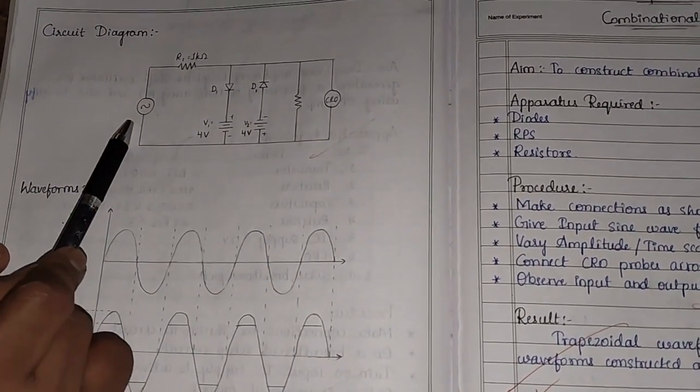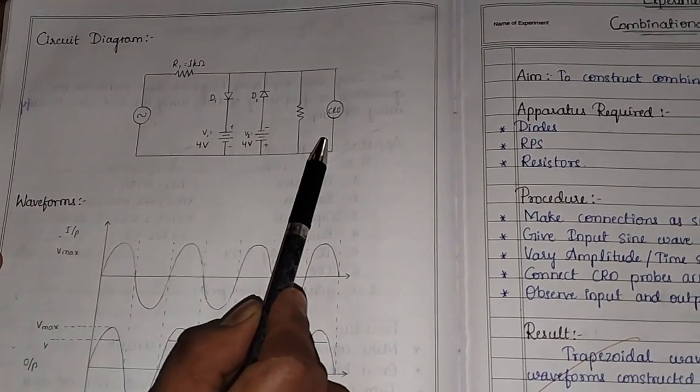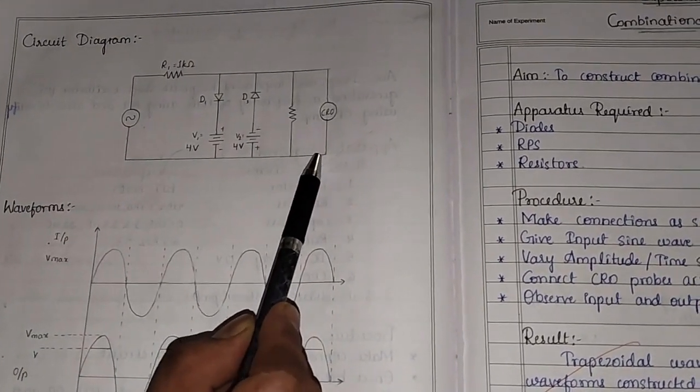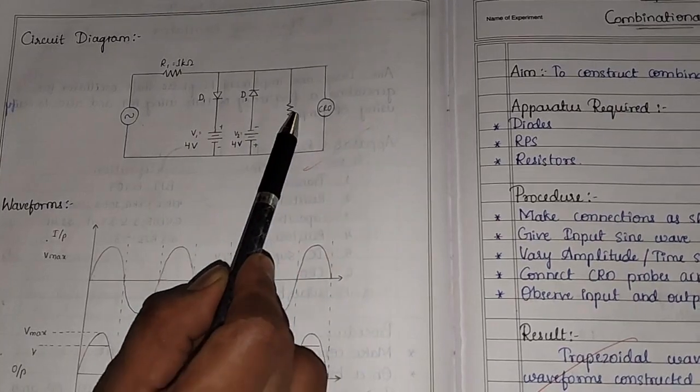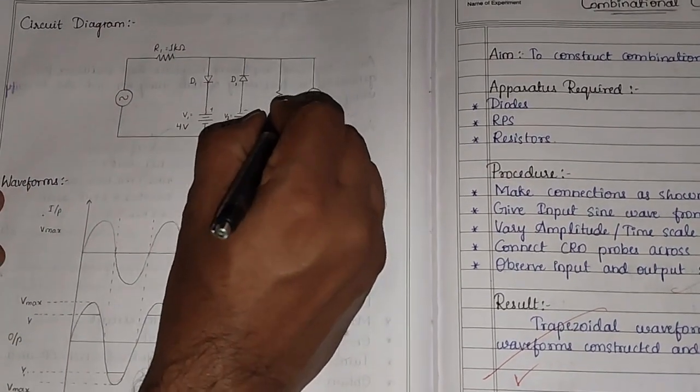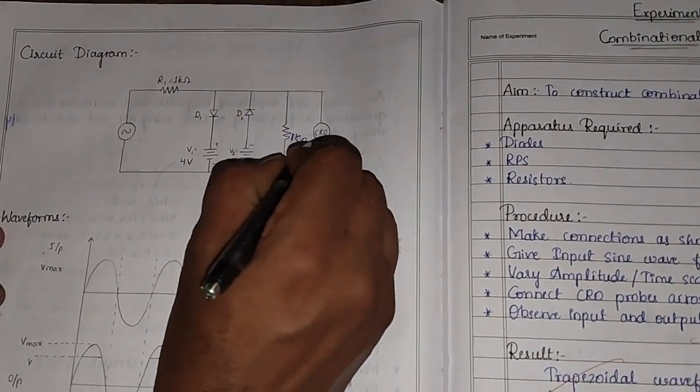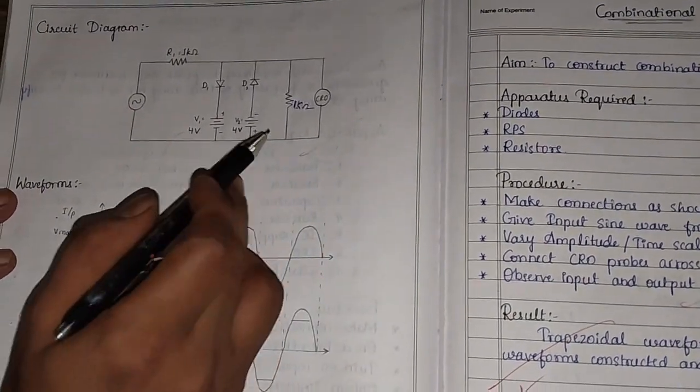Here we apply the sine wave, and the clipped waveform is obtained at the output resistor R. It should be 1 kilo-ohm. The load should be 1 kilo-ohm.